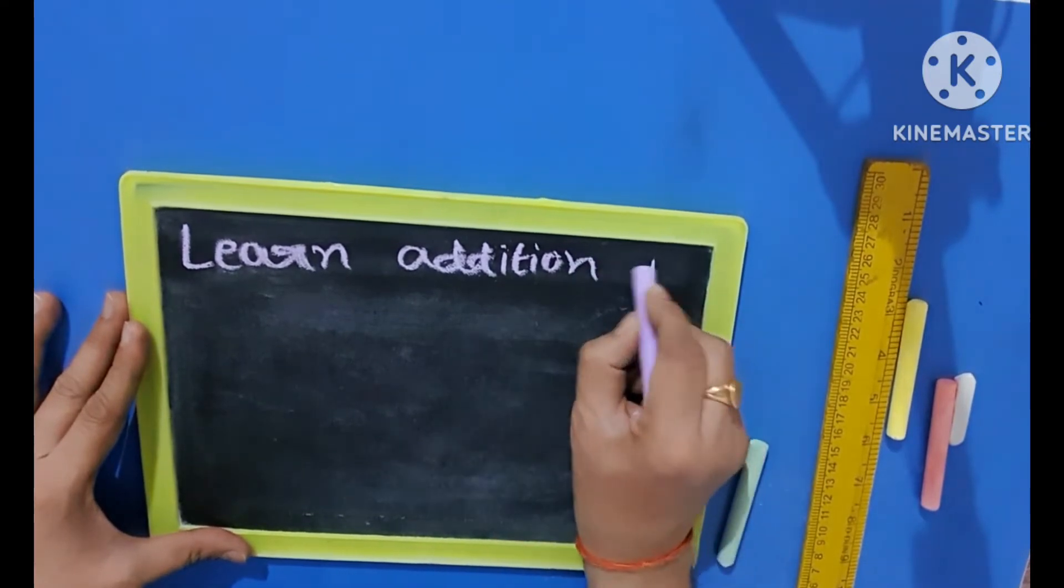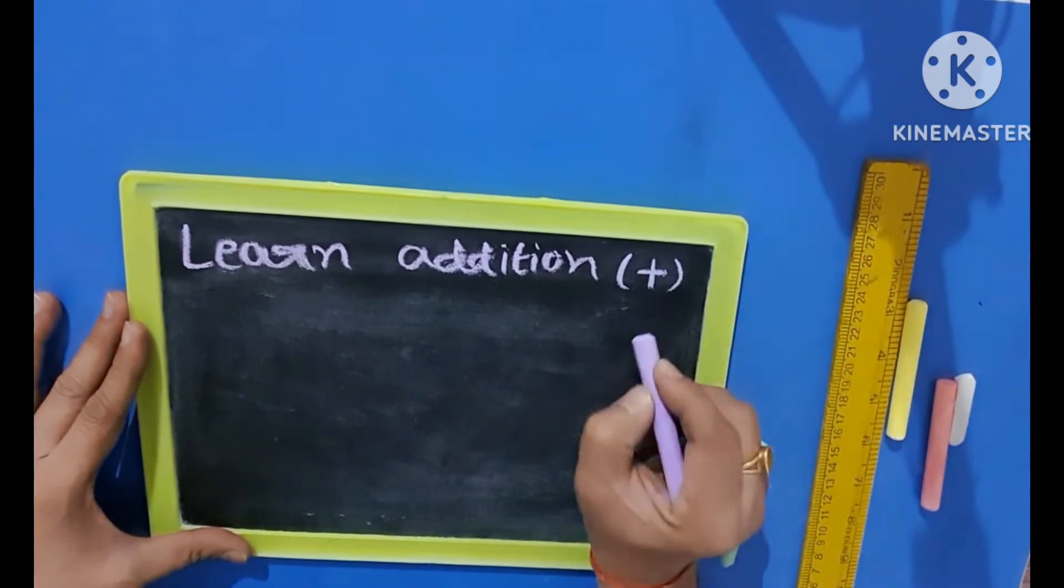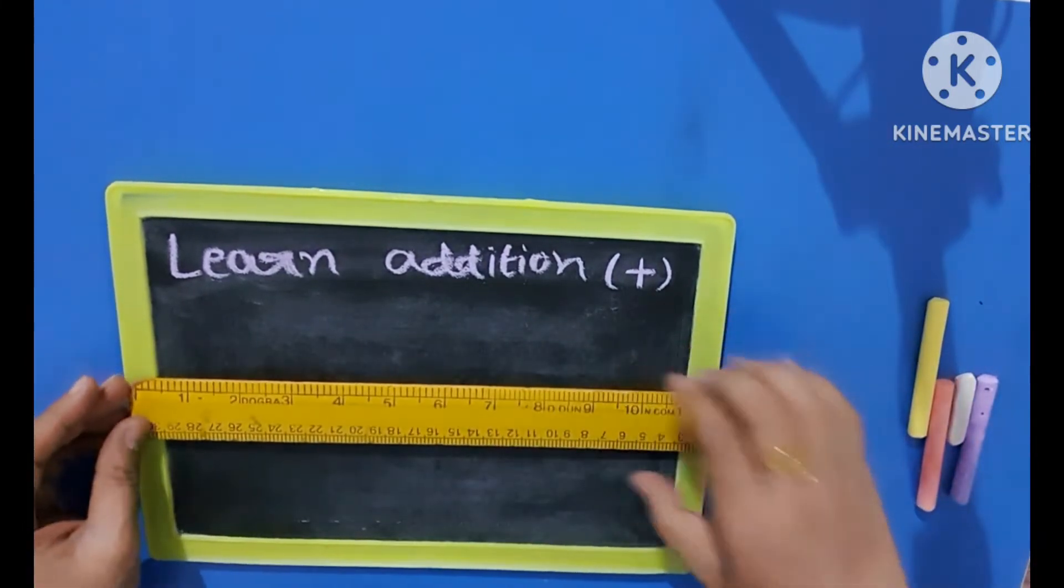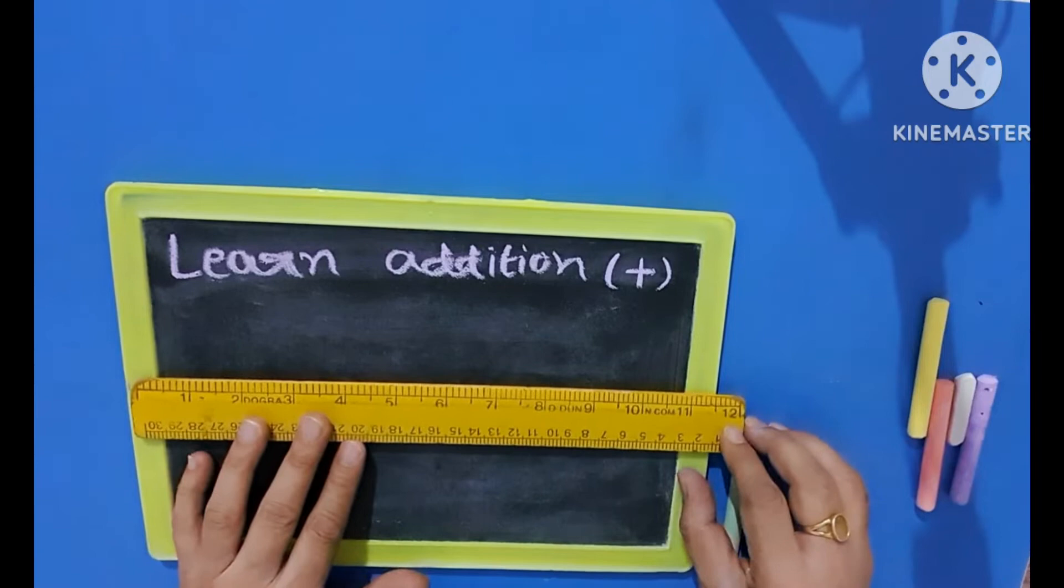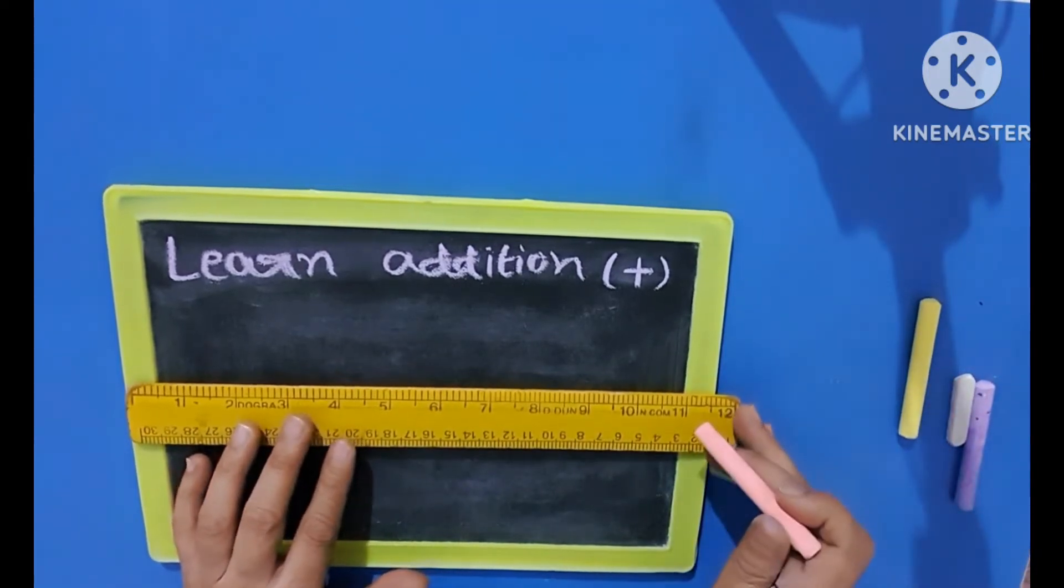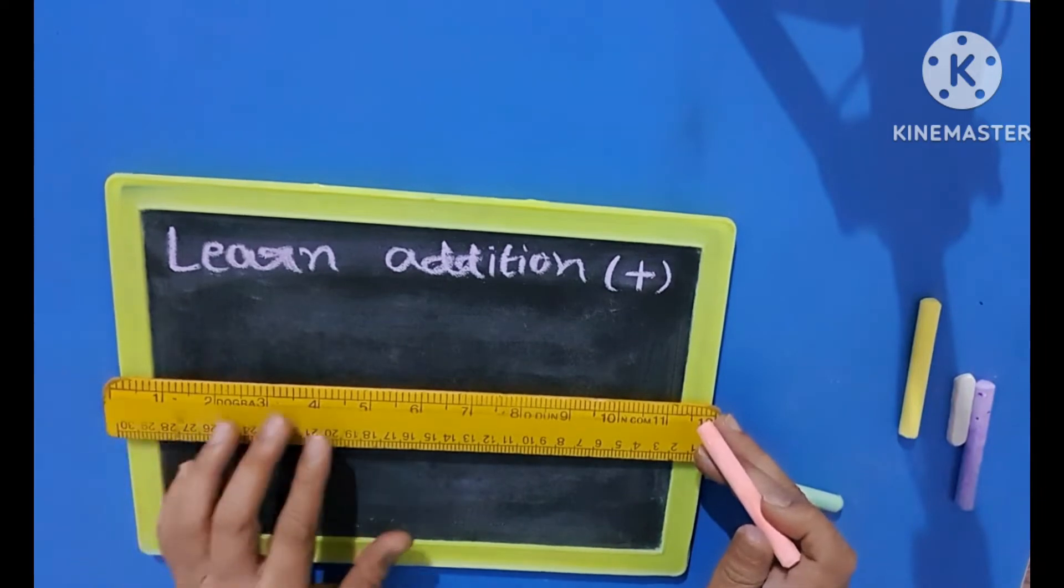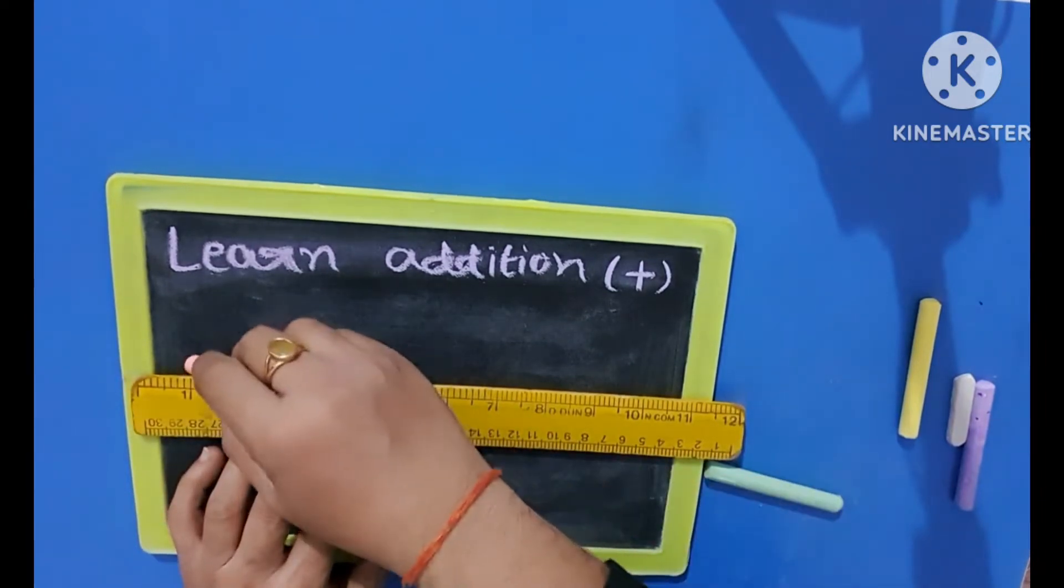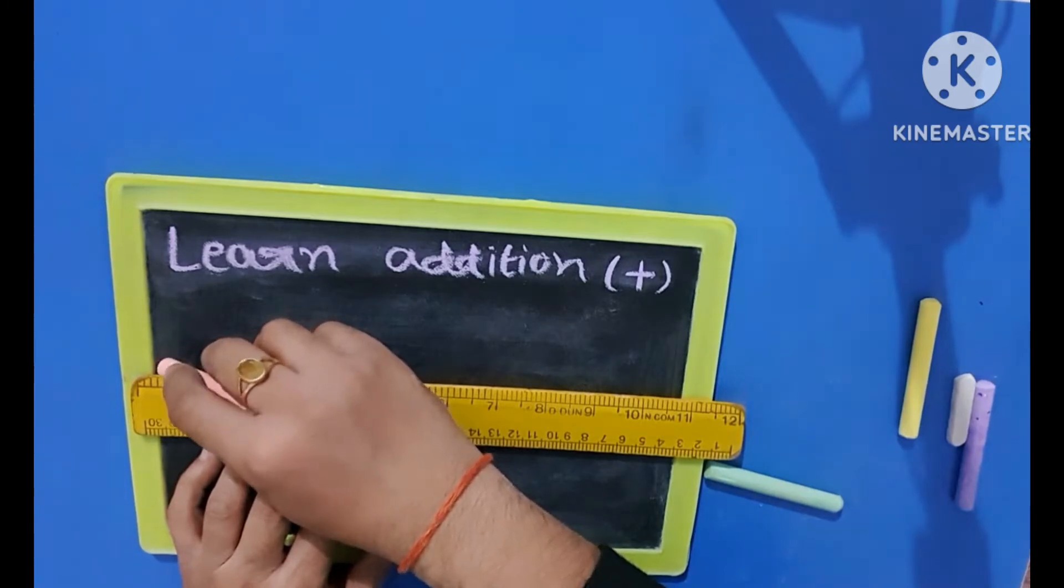Hello students, today we will learn addition and the sign of addition is plus. This is the easiest method to learn addition. Here we will make a straight line which should be horizontal.